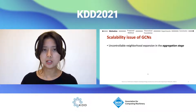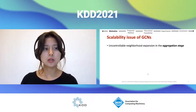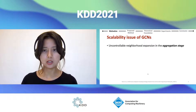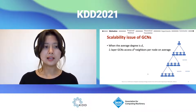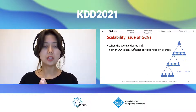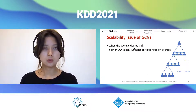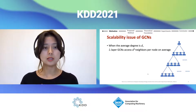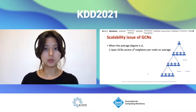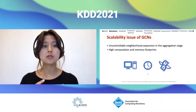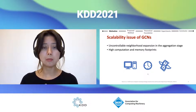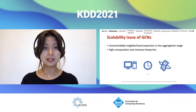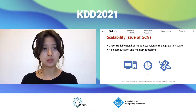The main scalability issue of GCN comes from uncontrollable neighborhood expansion in the aggregation stage. When the average degree is D, L-layer GCNs need to assess D^L neighbors per node. For instance, when a graph has average degree 10, three-layer GCNs need to assess 1,000 neighbors per node. This uncontrollable neighborhood expansion makes GCN incur high computation and memory costs, making it not scalable enough for real-world graphs.